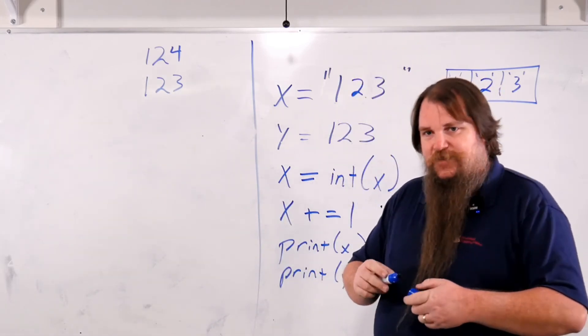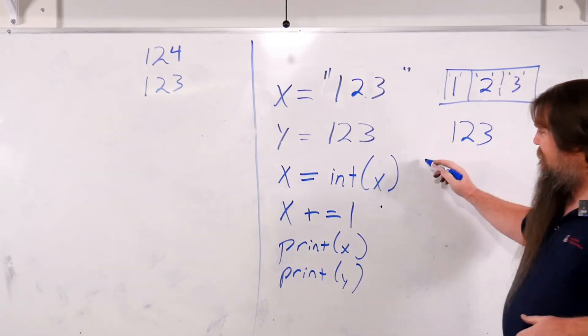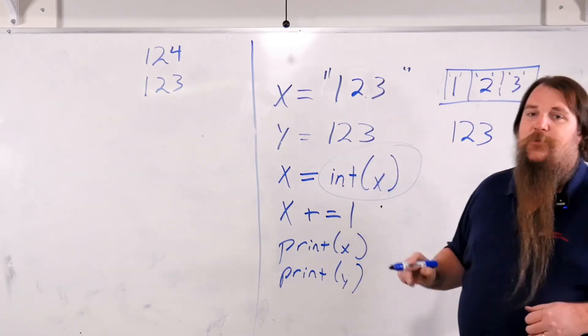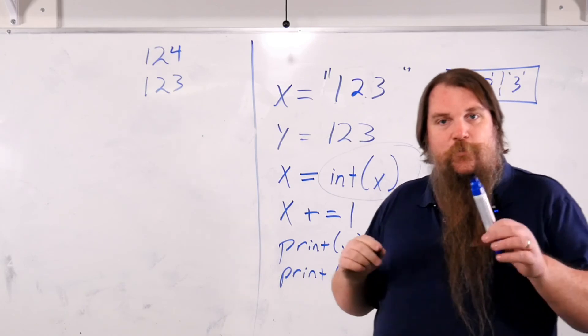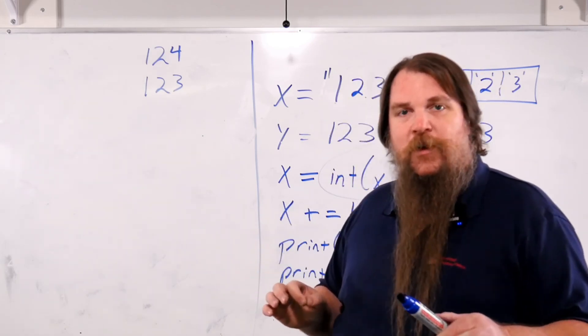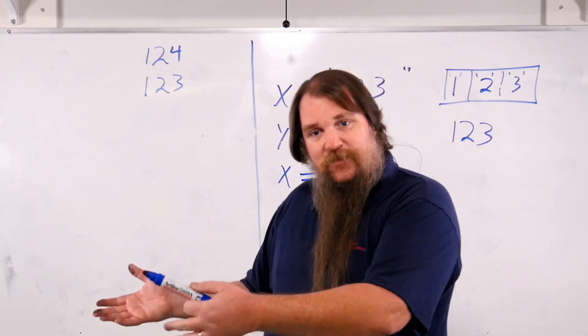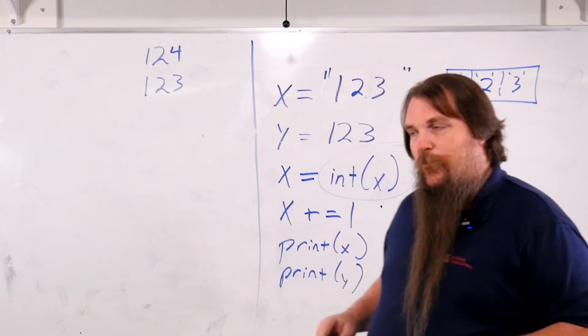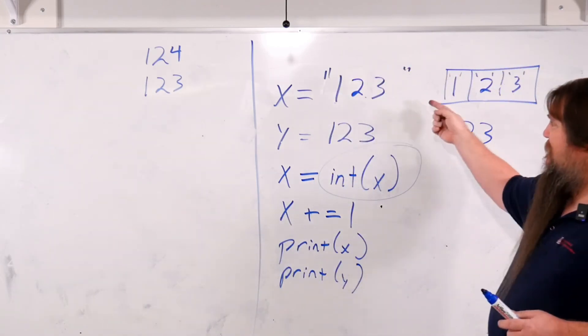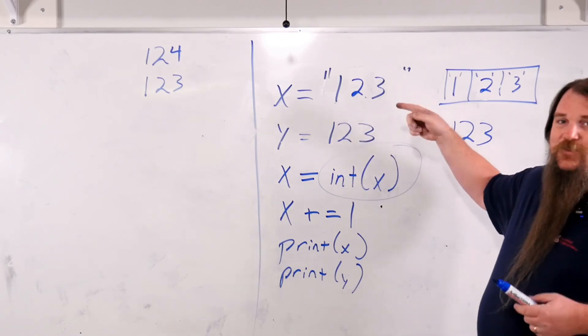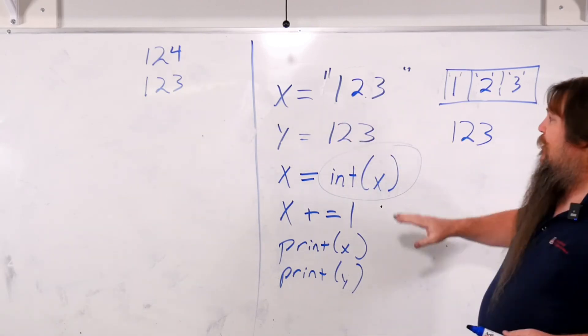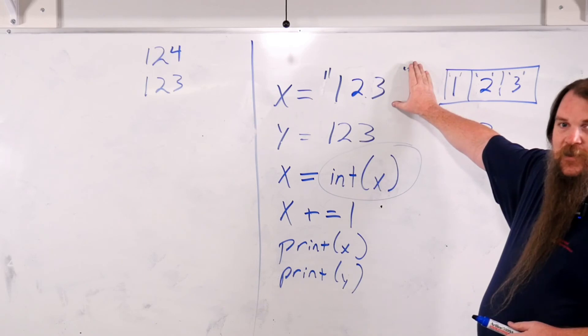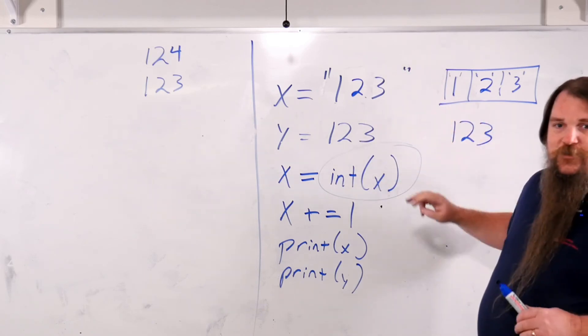So that is the basics. Pay attention to this because we will often find ourselves reading data from the user. We'll either be reading from a file on disk or we'll be reading from the user actually typing on the keyboard. Whenever we read from the user, the data we're going to get, even if it has numeric contents, will be a string originally. We'll need to convert it to an integer by doing this.